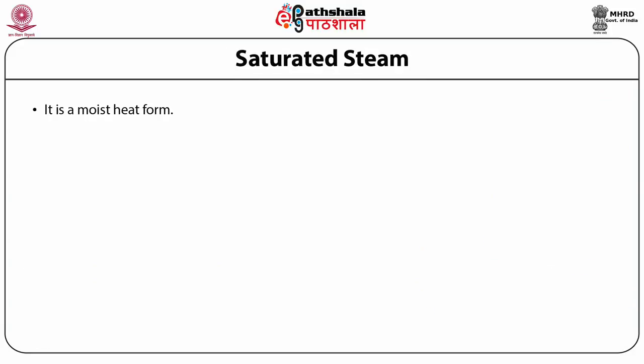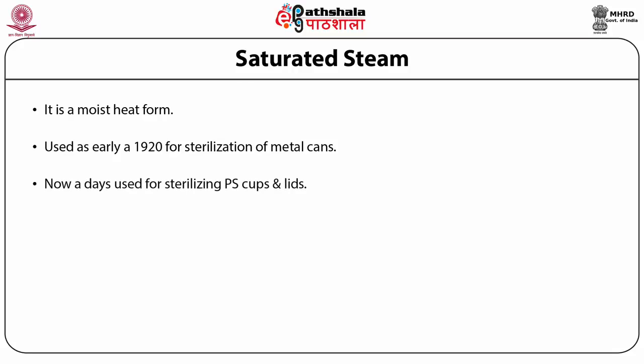Saturated steam is a moist heat method. Sterilization of metal cans and lids by saturated steam was used as early as 1920 in the USA. It is also used today for sterilizing thermostable plastic cups. In high-speed packaging machines, the surface temperature of the material must be increased to 135 degrees Celsius.